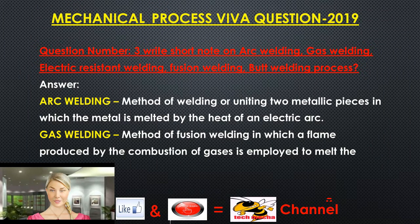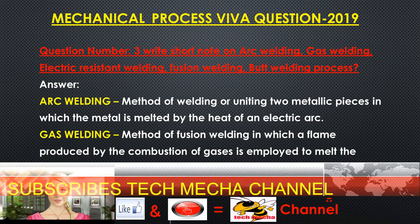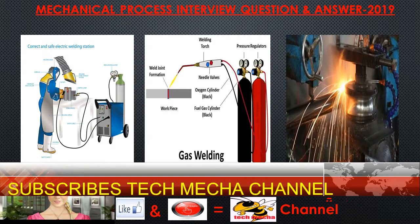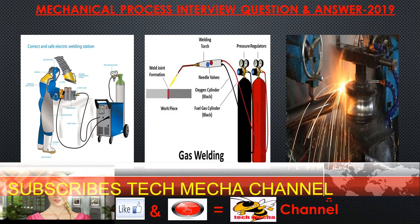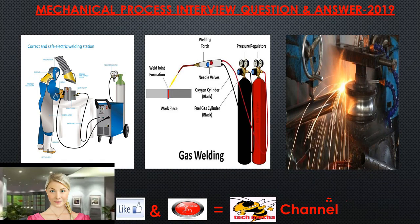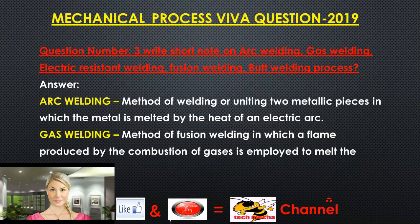Question 3: Write a short note on arc welding, gas welding, electric resistance welding, fusion welding, and butt welding process. Arc welding is a method of welding or uniting two metallic pieces in which the metal is melted by the heat of an electric arc. Gas welding is a method of fusion welding in which a flame produced by the combustion of gases is employed to melt the metal.